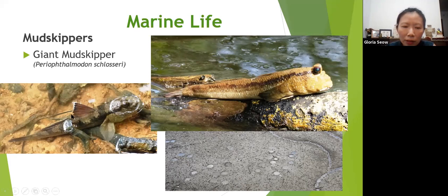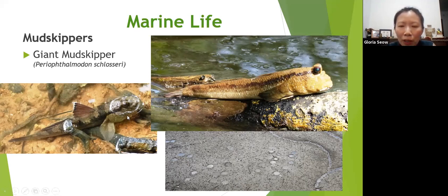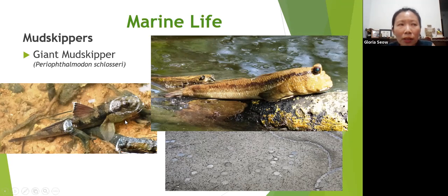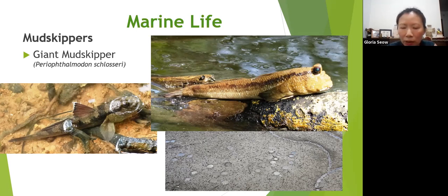Mudskippers are able to breathe out of water because if the skin is moist like a frog it can breathe through the skin. They have a water tank in their mouth and gill chambers, absorbing oxygen from there over time. However, the mudskipper needs to go back to water periodically to replenish with fresh oxygenated water.